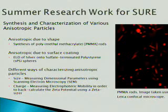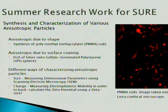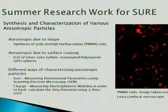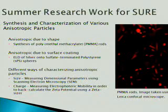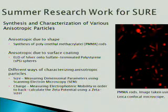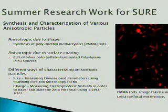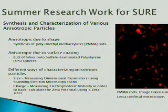There are two different types of anisotropic particles that I've dealt with. The first is anisotropic due to its shape. I have been involved in the synthesis of polymethylmethacrylate rods, or PMMA rods, and you can see that in the picture on the right. These particles are anisotropic, meaning they are directionally dependent with regard to their shape — their length is different from their breadth. I've also dealt with anisotropic particles due to surface coating, and I'll expand on that today with the ELD of silver onto sulfate-terminated polystyrene spheres.